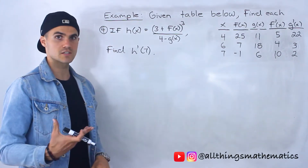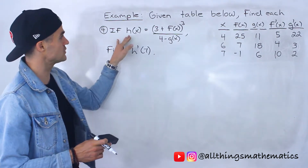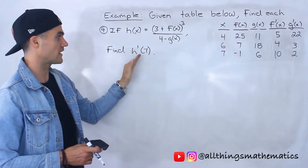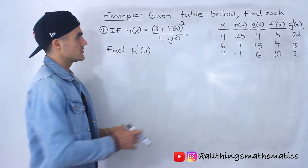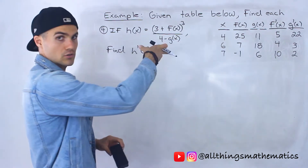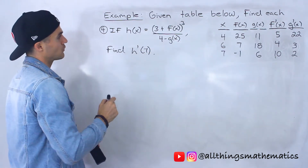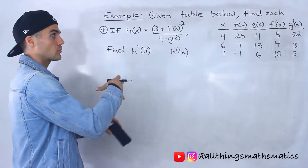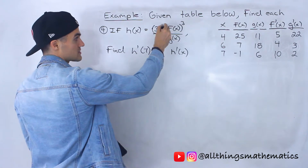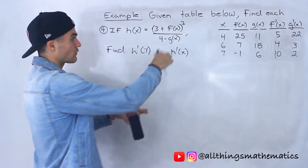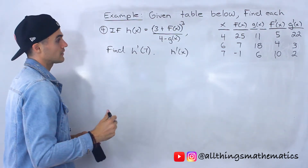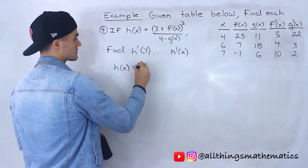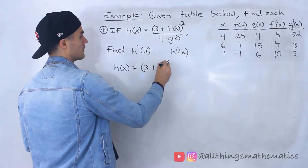Moving on to the fourth scenario — this one's going to be pretty long, there's going to be a lot going on, heads up. If h of x equals the quantity 3 plus f of x to the power of 3, all over 4 minus g of x, we have to find h prime of 7. Notice here that we're working with a rational function, so when we find the derivative h prime of x we're going to have to use the quotient rule. And within the quotient rule we'll also need the chain rule, because the numerator has 3 plus f of x raised to the power of 3.